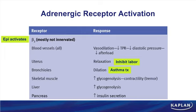Beta-2 receptors are also found on the liver and pancreas, producing metabolic effects. On skeletal muscle and liver, you see an increase in glycogenolysis — the primary action of beta-2 activation to increase blood glucose. On the pancreas, beta-2 receptors on beta cells are less numerous than alpha-2 receptors. The key question: what does beta-2 activation do to blood glucose? It increases blood glucose, mainly through skeletal muscle and liver activation.